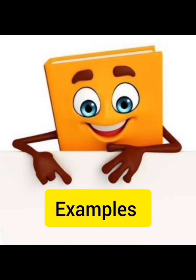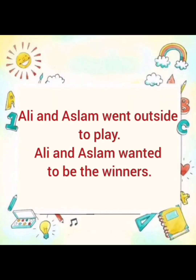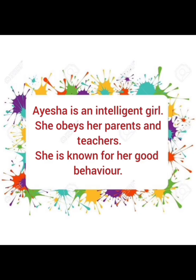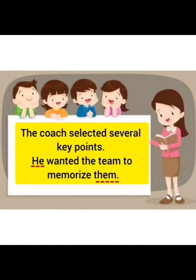Now, examples in the form of sentences are here. The repetition of Ali and Aslam in both the sentences doesn't give a good impression. Let's have a look at another example. Haris is a good boy. He gets up early in the morning. Instead of Haris, I have used 'he'. Aisha is an intelligent girl. She obeys her parents and teachers. She is known for her good behavior. Instead of Aisha, 'she' is used in the rest of the sentences, which gives a good impression.